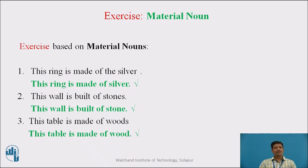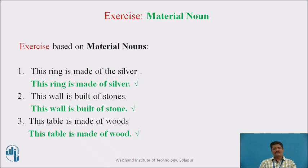Sentence No. 2: 'This wall is built of stones.' There is an error — the use of the plural Material Noun 'stones.' The right sentence is: this wall is built of stone. Whenever a Material Noun refers to the material from which something is made, it should be in the singular form. So this wall is built of stone.